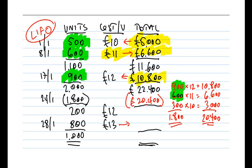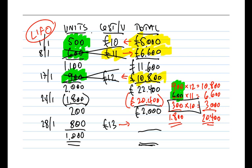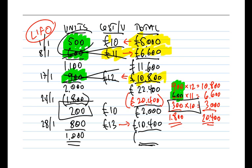Knocking off £20,400 from the £22,400 leaves £2,000 of inventory. The reason it differs: we've got rid of all the purchase on the 17th, all the purchase on the 8th, and 300 units from the opening inventory, leaving 200 units of the opening inventory at £10 each — 200 × £10 = £2,000. We then add the final purchase on the 28th: 800 units at £13 = £10,400. That takes us to 1,000 units of closing inventory with a total value of £12,400.